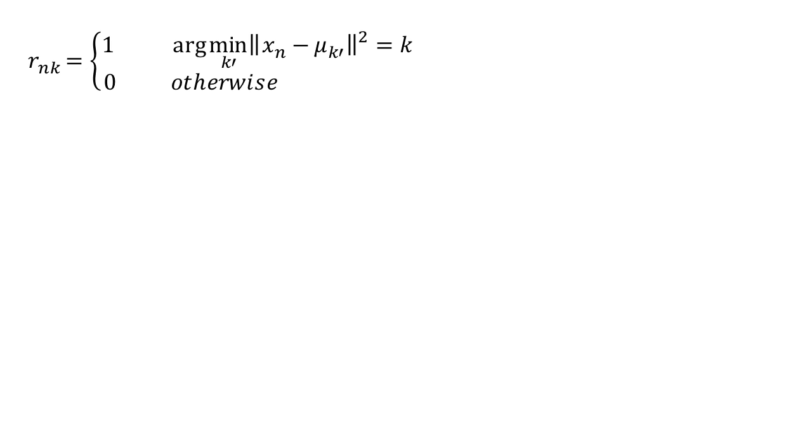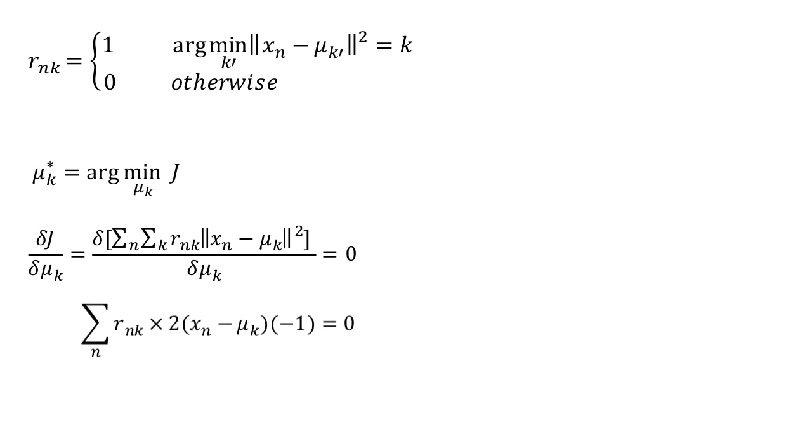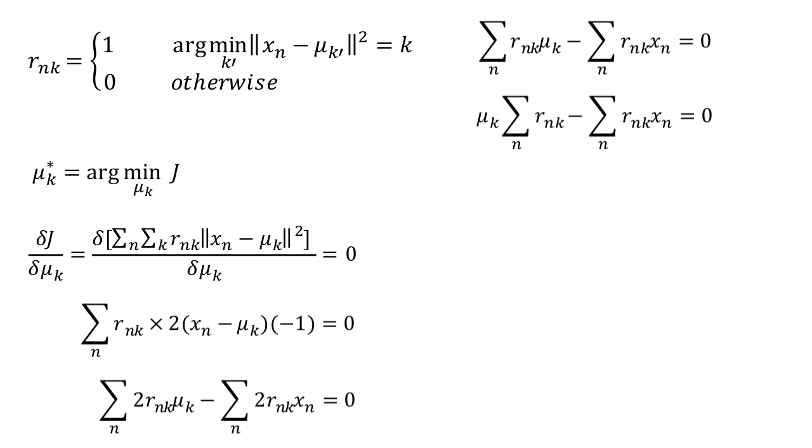In k-means clustering, the only set of parameters we need to learn are the cluster centers. The idea is to find the optimal cluster centers mu k that minimize the distortion. We determine this by taking the derivative of distortion with respect to mu k and equating it to 0. Let's split the sigma over the terms. Now remove the common 2. Take mu k out of the sigma as it is independent of n. And bring all the terms to the right-hand side.